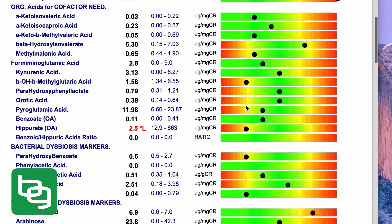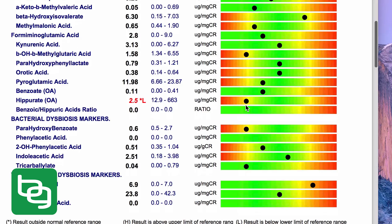Other markers to look at include pyroglutamic acid, which is to do with recycling of glutathione. The benzoate and hippurate are to do with phase two liver detoxification. Once again this comes back to amino acids, particularly glycine, cysteine, and glutamine.